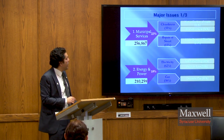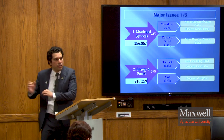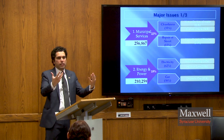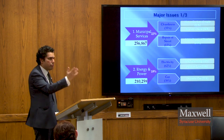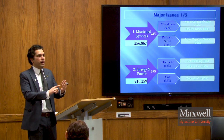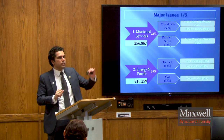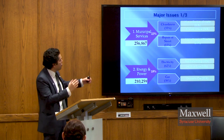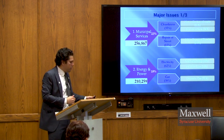We now have proper statistical data showing what problems exist where. The top issue nationwide is municipal services — garbage collection, street repair, street lighting — because for the common man, government means municipal service first. If clean water is available, garbage is lifted, roads are repaired, and street lights are working, the general impression is that government is working. Statistically, 22% of total complaints concern municipal services, 18% energy and power, 11% education, and 6% health.